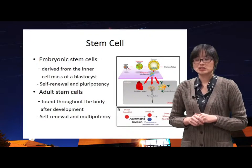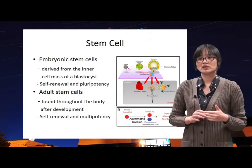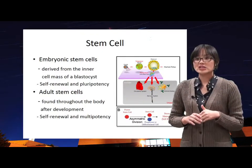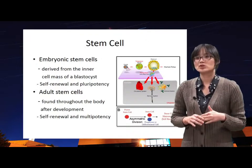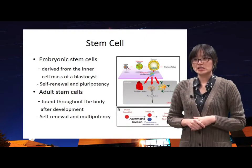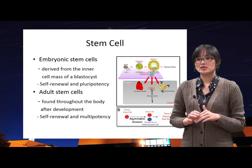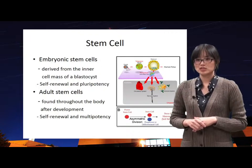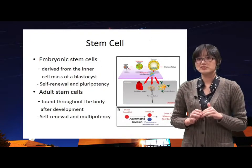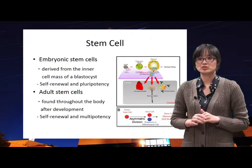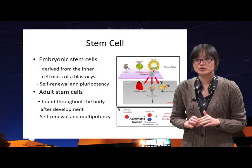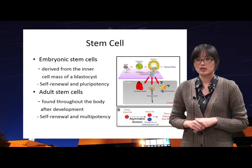A blastocyst consists of a trophoblast, a cavity, and an inner cell mass. In other words, individual inner cells indicate embryonic stem cells, which are undifferentiated cells that can differentiate into specialized cells and divide to produce more stem cells.